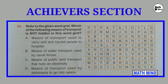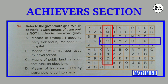Question number 34: Refer to the given word grid. Which of the following means of transport is not hidden in this word grid? Option A: Ambulance — used to carry sick and injured people to hospital. Option B: Submarine — used by naval forces for water transport. Option D: Rocket — used by astronauts to go into space. Option C: Metro train — means of public land transport that runs on electricity. Metro train is not present in the word grid. So option C is correct.